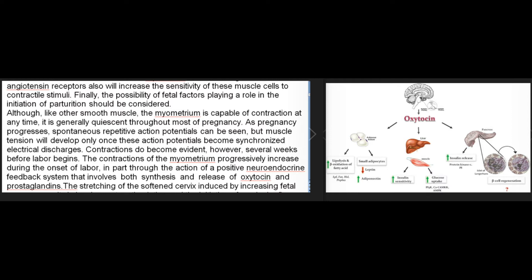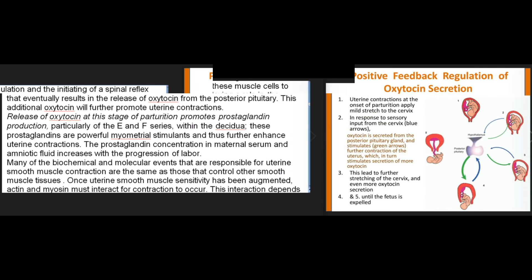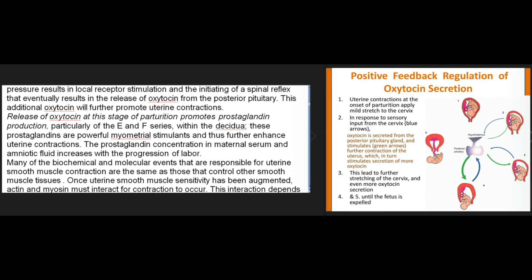Contractions increase in part through the action of a positive neuroendocrine feedback system involving synthesis and release of oxytocin and prostaglandins. Stretching of the softened cervix induced by increasing fetal pressure results in local receptor stimulation and initiates a spinal reflex that eventually results in release of oxytocin from the posterior pituitary. This additional oxytocin further promotes uterine contractions. Release of oxytocin at this stage promotes prostaglandin production, particularly of the E and F series within the decidua, which are powerful myometrial stimulants that further enhance uterine contractions.